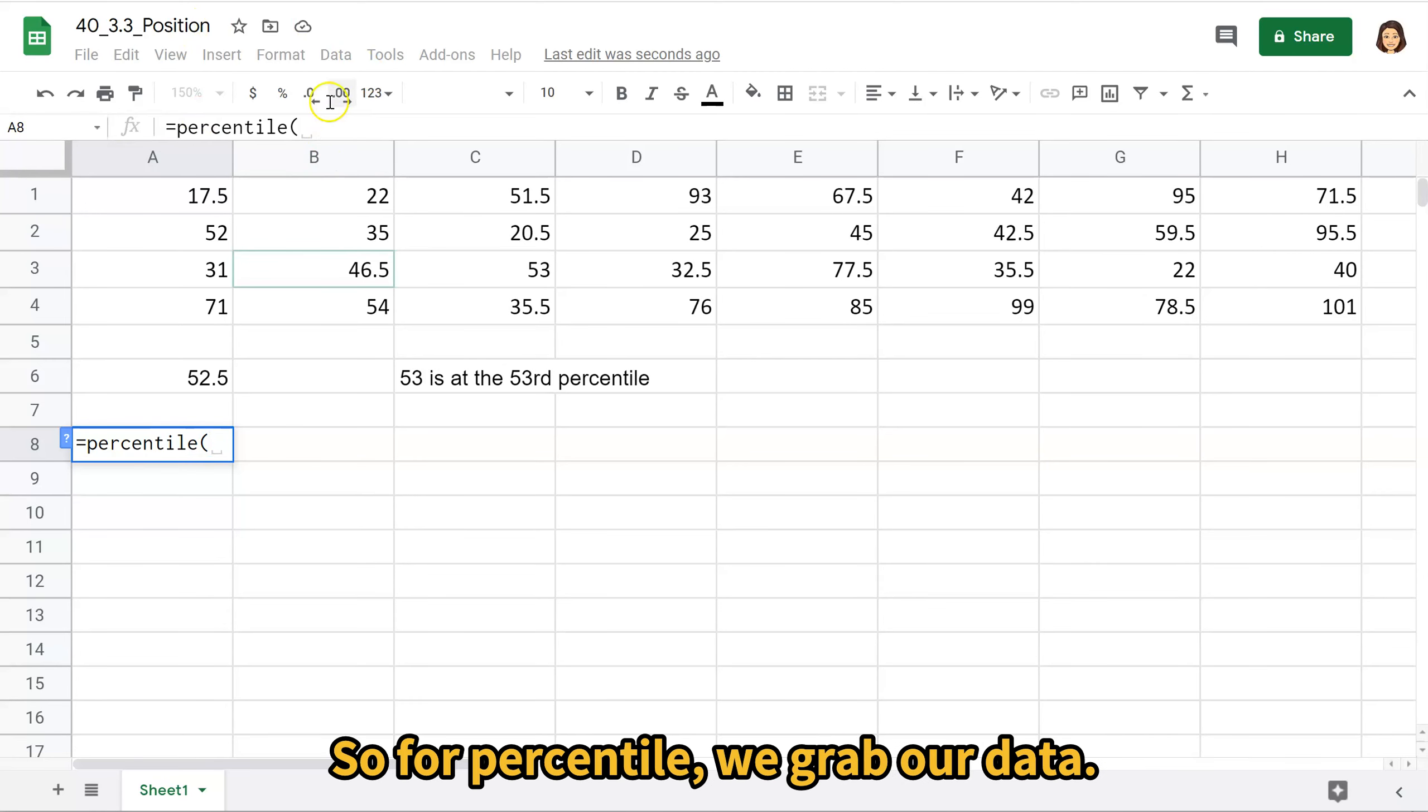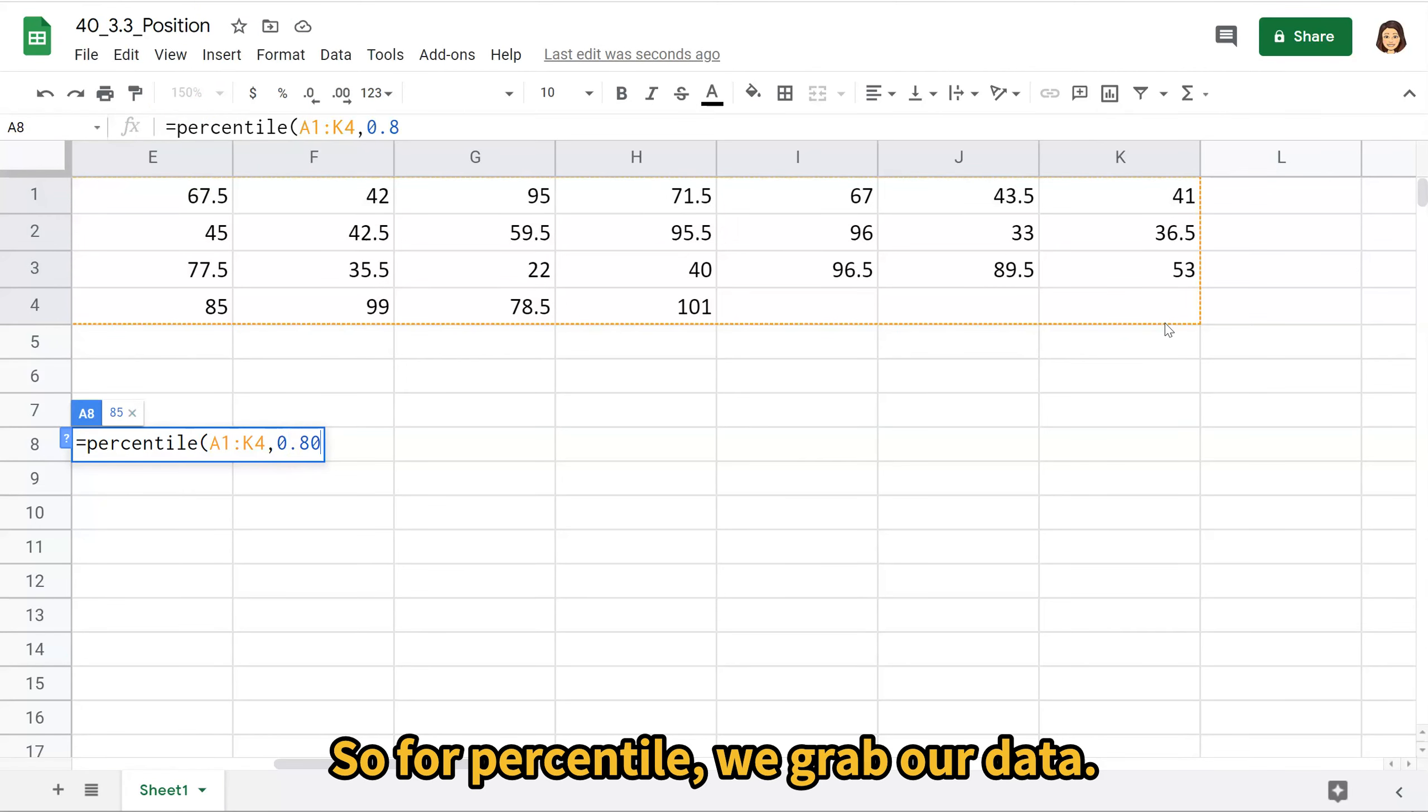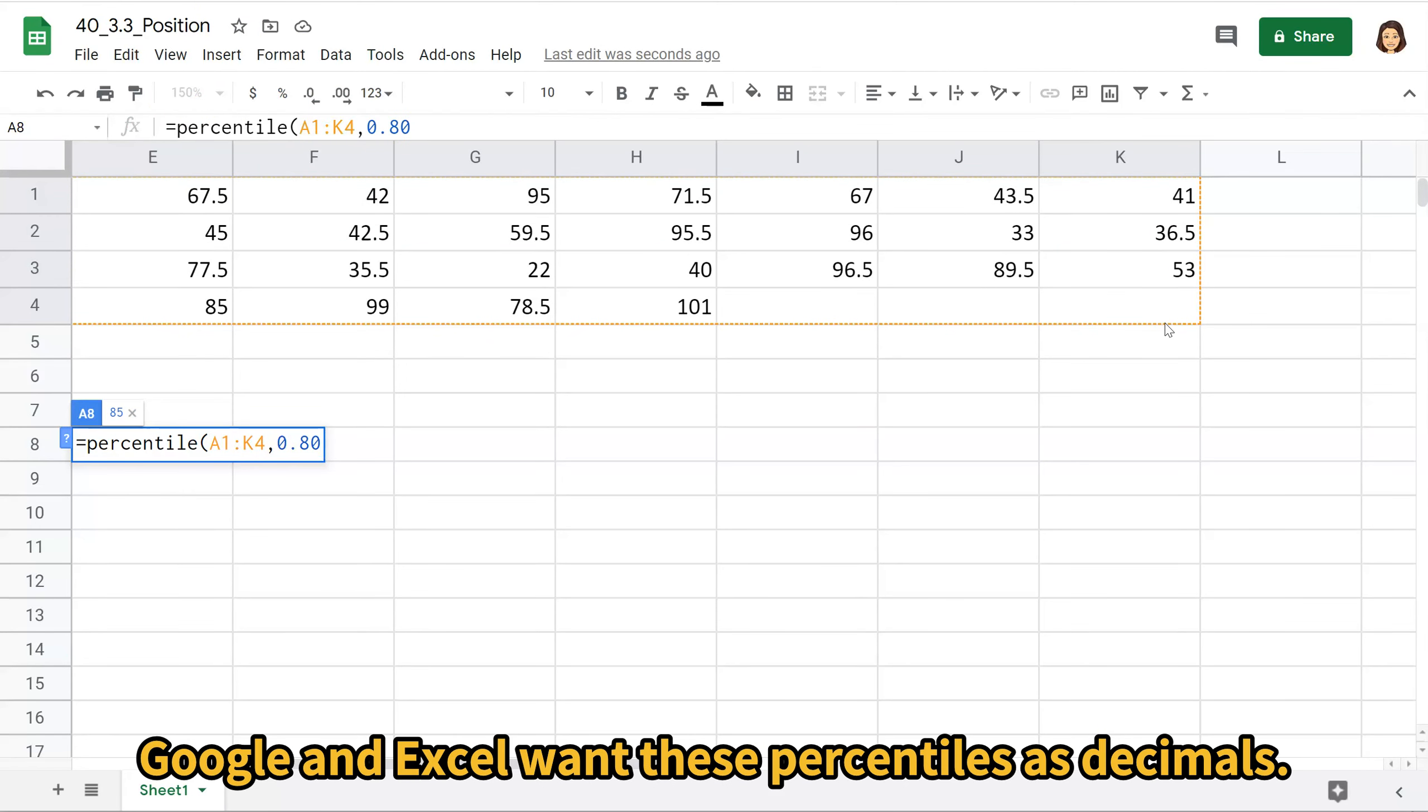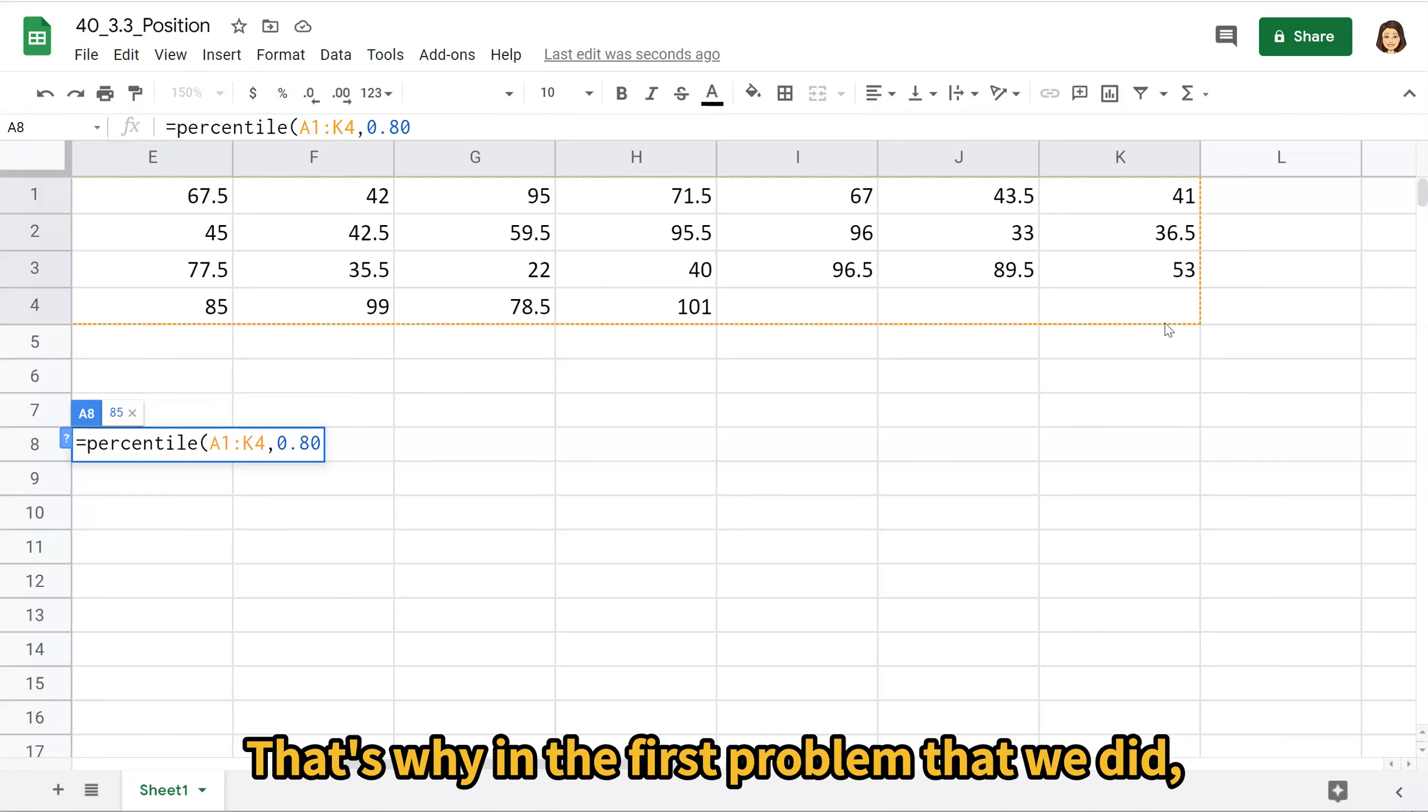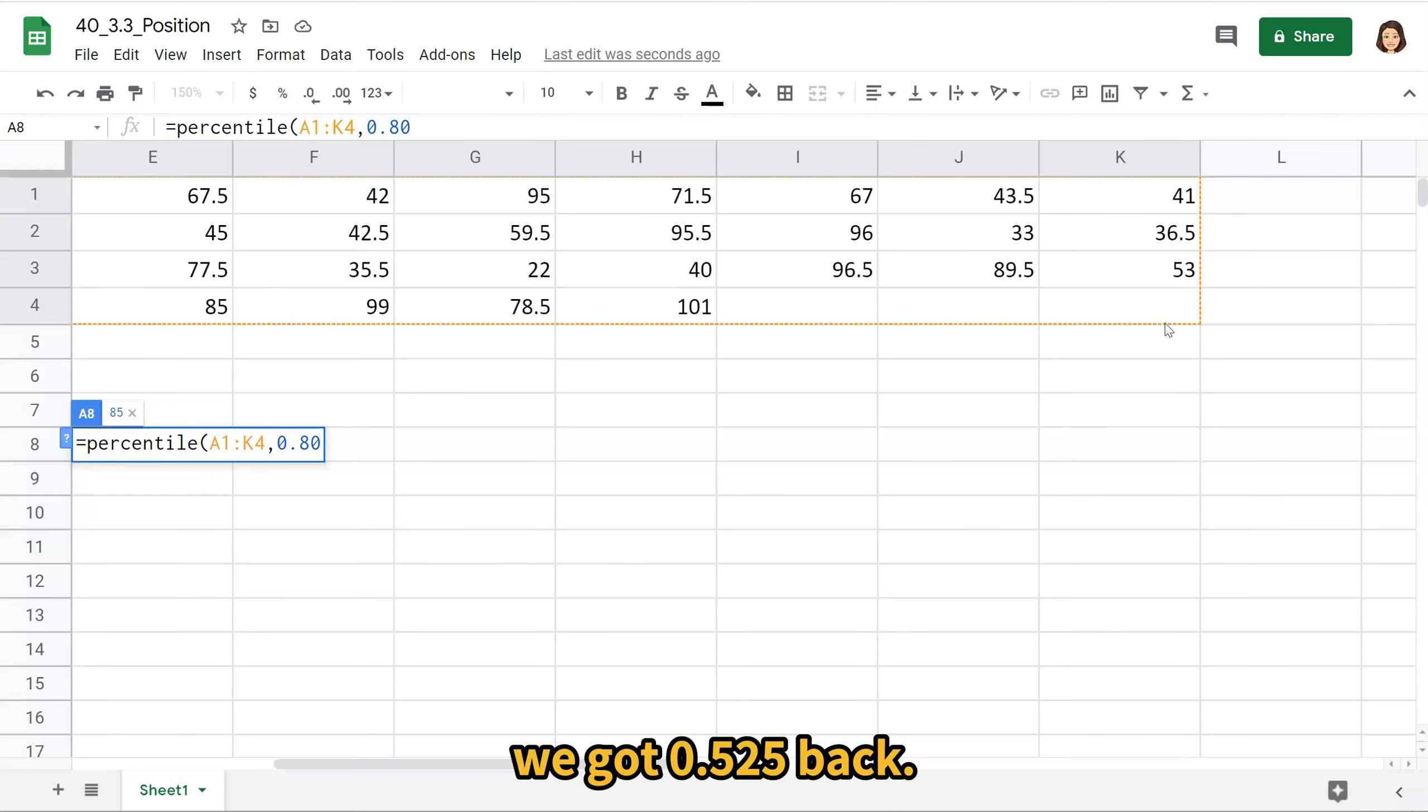So for PERCENTILE, we grab our data. And Google and Excel want these percentiles as decimals. That's why in the first problem that we did, we got 0.525 back. It was giving us the decimal equivalent of the percentile.